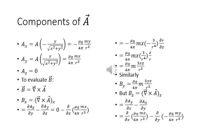Ax equals A · (−y / √(x² + y²)) = −μ₀m y / (4π r³). Ay equals A · (x / √(x² + y²)) = μ₀m x / (4π r³). Az equals zero.